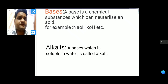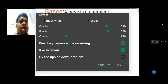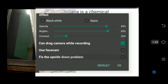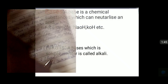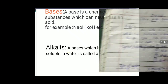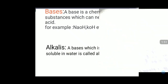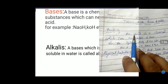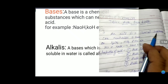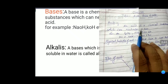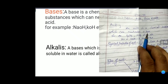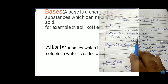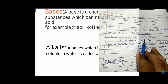Now we will discuss in detail. First we start from acid. An acid is a chemical substance which can neutralize a base. For example, H₂SO₄ (sulfuric acid), HNO₃ (nitric acid), and HCl (hydrochloric acid) are all acids.